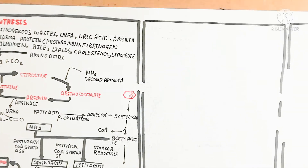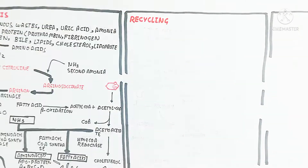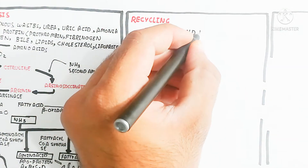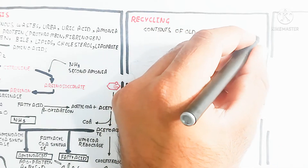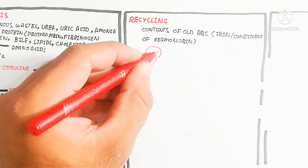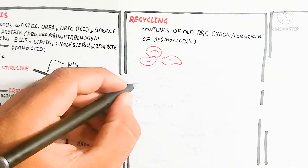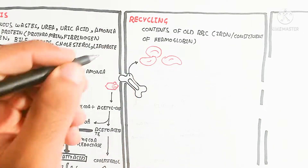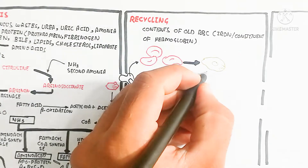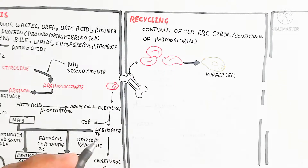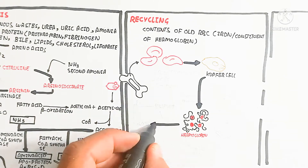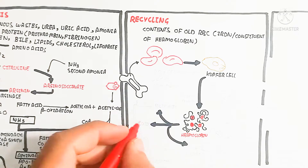The liver is also involved in recycling the contents of red blood cells, including iron and the constituents of hemoglobin. Red blood cells are produced from bone marrow — reticulocytes convert into erythrocytes — and after about 120 days they become old and their contents are reused.